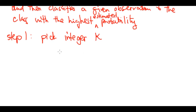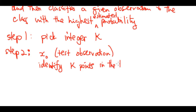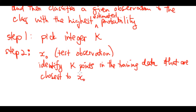After picking integer k, we have a test observation x-naught. The KNN classifier will identify k points in the training data that are closest to x-naught. It finds those n-naught observations that are close to x-naught.